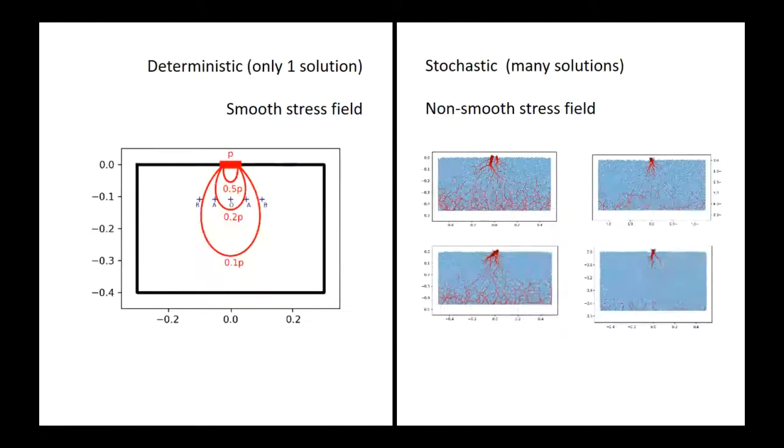However, each time that you repeat this experiment, you achieve a different system of interparticle forces, and hence you achieve a different stress field. So how can we deal with these two different approaches? One is deterministic, there is only one solution, and the stress field is smooth.